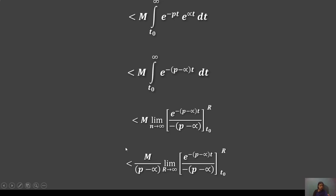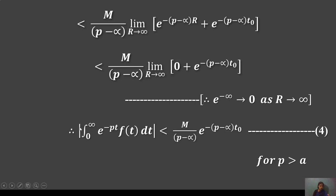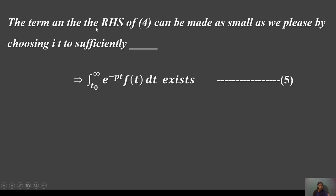This gives us: less than M/(p−α) times the limit as r tends to infinity of e^(−(p−α)r) + e^(−(p−α)t₀). This evaluates to M/(p−α)·e^(−(p−α)t₀), so the integral from 0 to infinity of e^(−pt) f(t) dt is less than M/(p−α)·e^(−(p−α)t₀), for p > 0. Therefore the integral from t₀ to infinity of e^(−pt) f(t) dt exists.